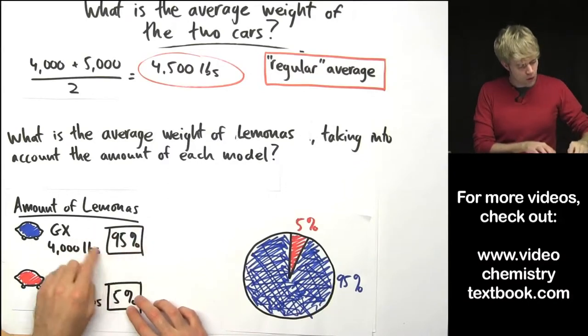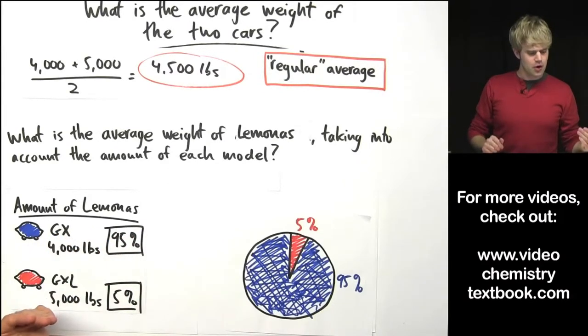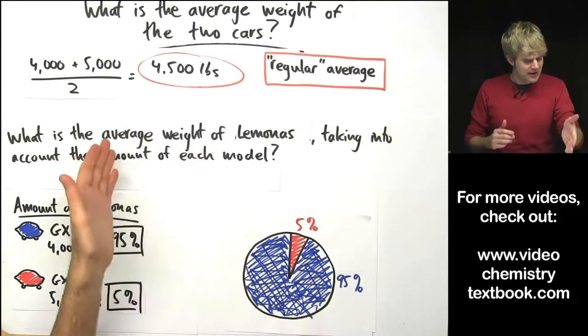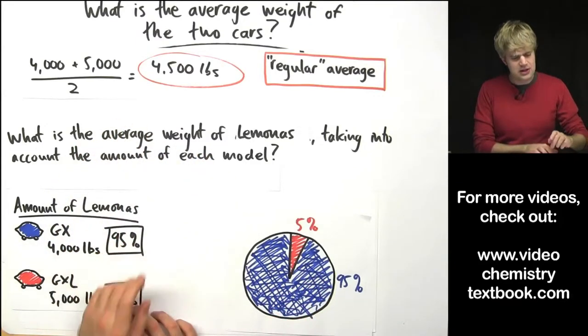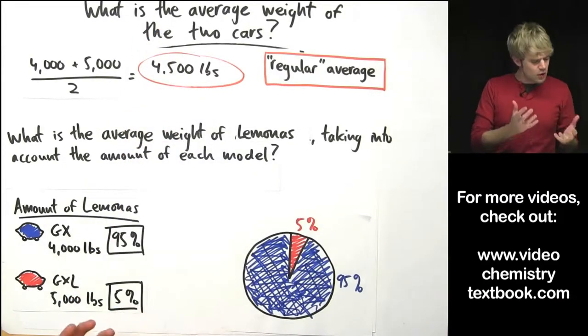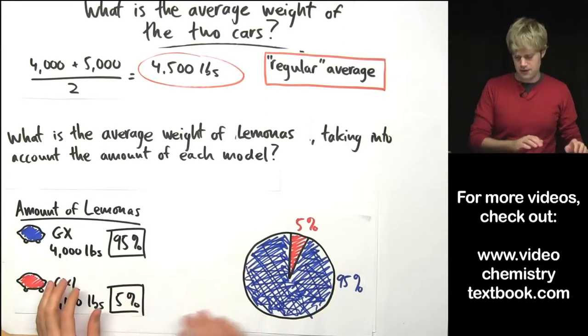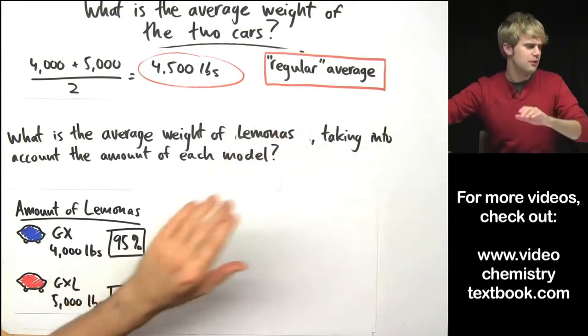Because there are so many more of the Lamonas GXs and they weigh less, we need to come up with an average that takes this into account and gives us a number that's not just right in the middle but would be closer to this because there's so many more of them. Here's how we do it.